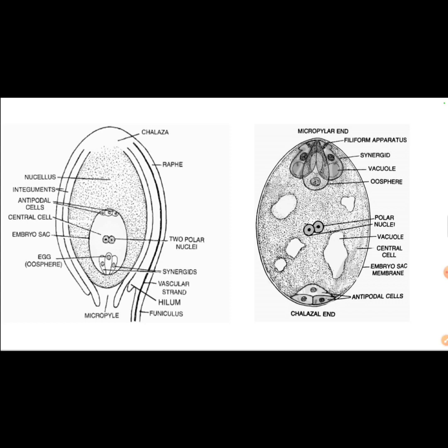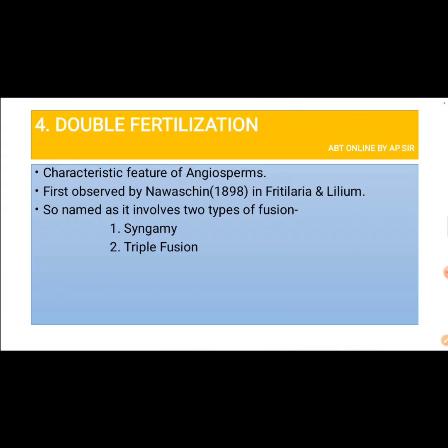Now we come to the all-important event of double fertilization, which is the characteristic feature of angiosperms. It was first observed by Navaskin in Fritillaria and Lilium. It is called double fertilization because it involves two types of fusion: syngamy and triple fusion.